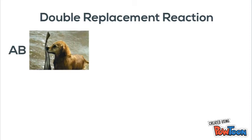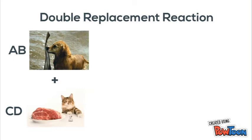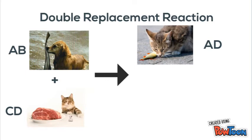An example of this is you have a fish with a dog plus a steak with a cat. Those are going to switch places to where you have the fish with the cat and the meat with the dog.